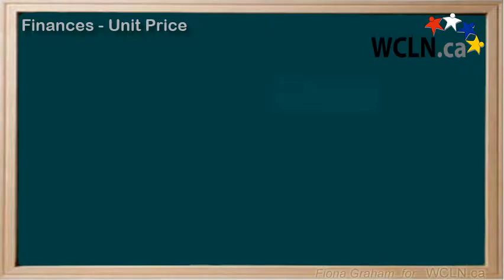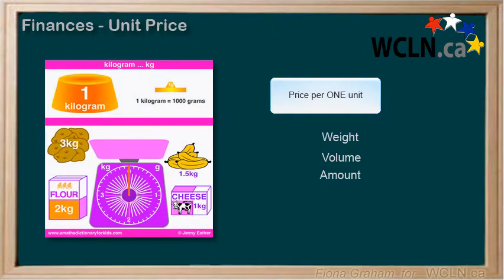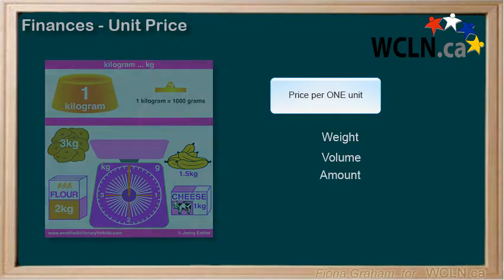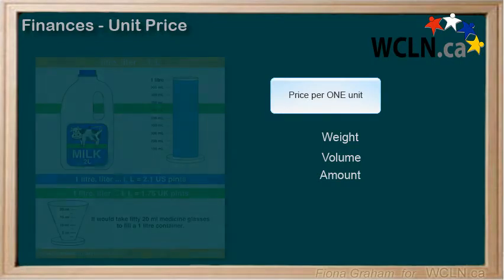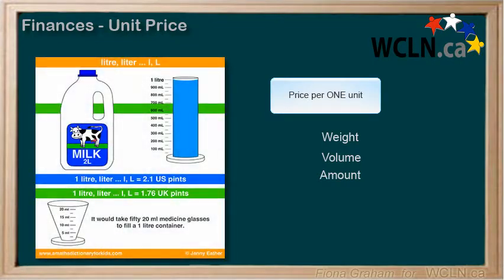Unit pricing is simply the price per unit of weight, volume, or amount of an item. In Canada, weight is generally calculated by grams or kilograms, sometimes in pounds, whereas volume is generally calculated in milliliters or liters.